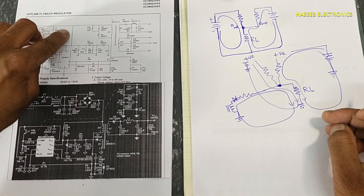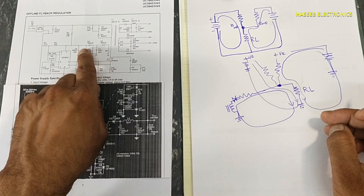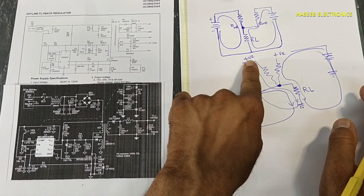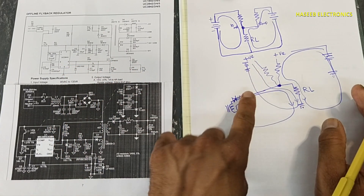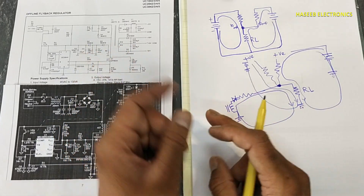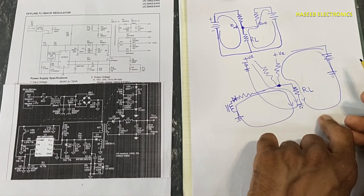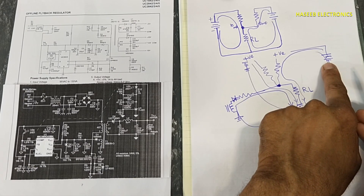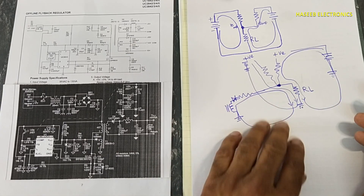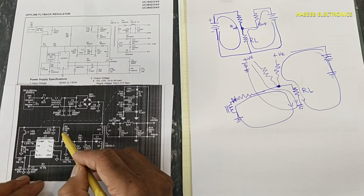Each voltage source will provide its current to the RL depending on its capacity. Here one source can provide just only one milliampere, another can provide 500 milliampere. Both currents will never interfere with each other because each current has its own reference point, so it has to complete its circuit from the originating point — whether it is a battery, capacitor, generator, or anything.